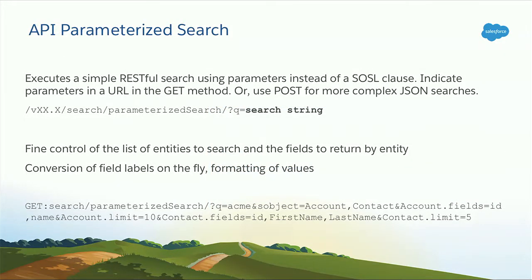To conclude on SOSL, there is also another API called Parameterized Search — think of it as a richer, higher-level abstraction on top of bare-metal SOSL. It handles things like layouts, which entities a given user can see, and which fields they can see. You also have automatic conversion of values on the fly — like currency and dates. Especially for mobile applications where you want to offload a lot of processing to the server, this is the API to leverage.